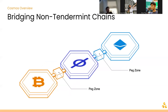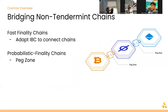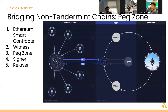Next, briefly, how bridges work with non-Tendermint chains. There are two types of considerations. For fast finality chains — typically proof of stake — it's pretty easy to use IBC to connect them. But for more probabilistic finality, like proof of work, they need to use something called a peg zone. I don't know a ton about this, but I'll briefly dive in.